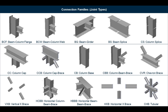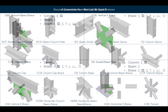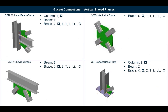As we start designing connections, we will select joints within the same connection family with similar forces so they can be designed together. For this video we will be designing connections for the vertical braced frames that were analyzed and designed in RAM Structural System.